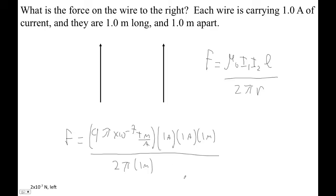Mathematically we get 4 pi over 2 pi, which is just 2. So the force is 2 times 10 to the minus 7th newtons.